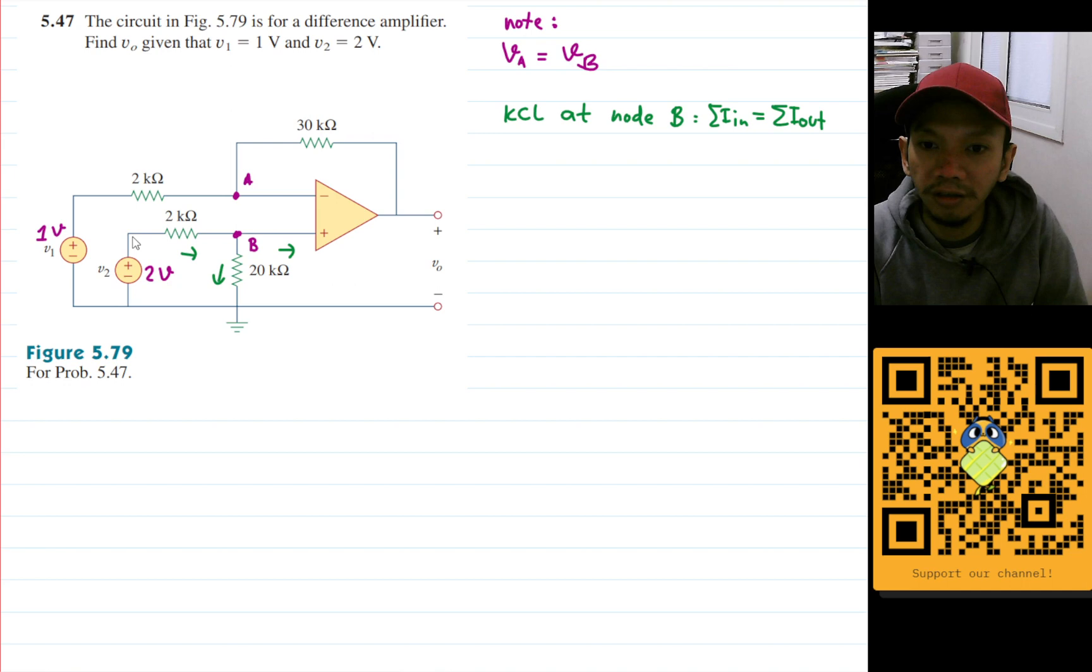The only current that goes in here is from V2, which is 2 volt here: 2 volt minus VB divided by 2. And the current that goes out - this is going to the op-amp, and remember that the currents that goes into op-amp terminal will be 0. And this current here is going out, so I will have VB minus 0, because it is ground, divided by 20.